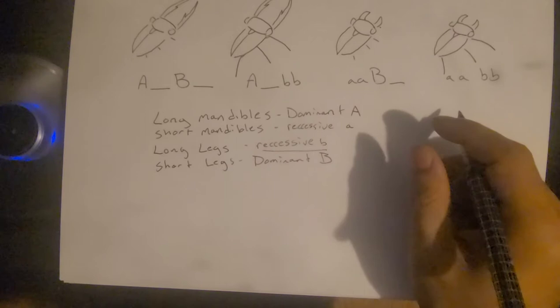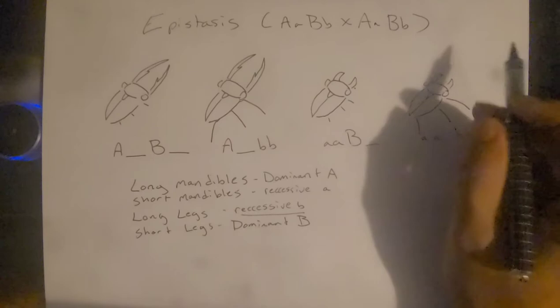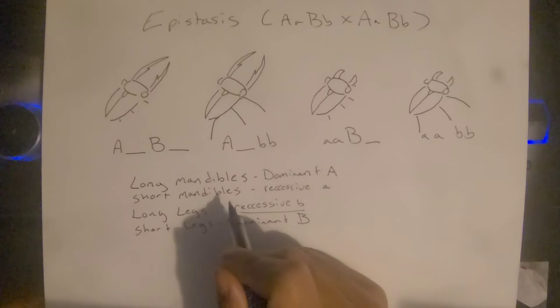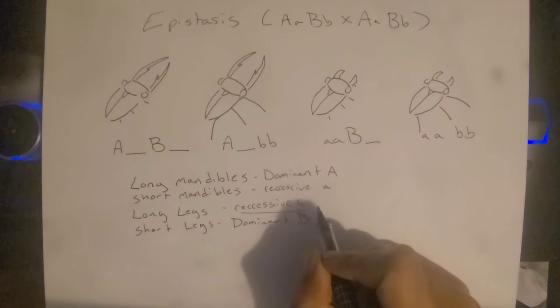First we should understand what normal dominant-recessive interactions look like. For this example I have stag beetles here because I like stag beetles. Our dominant trait is going to be long mandibles, the recessive trait is going to be short mandibles. Long legs are going to be recessive b, and short legs dominant B.